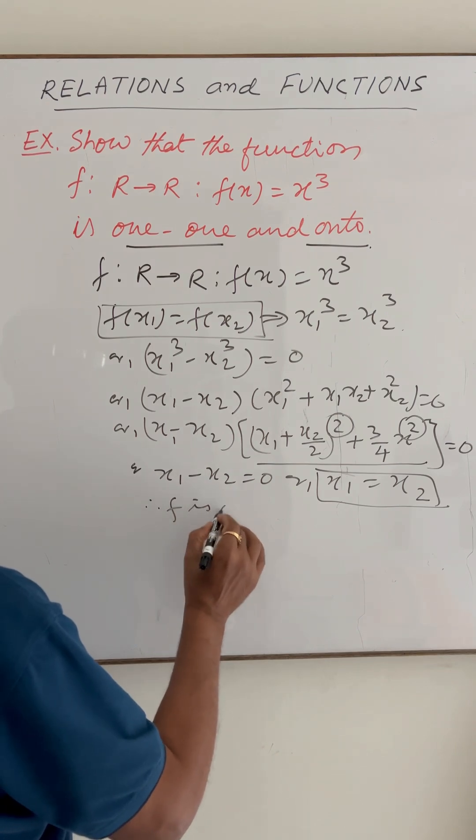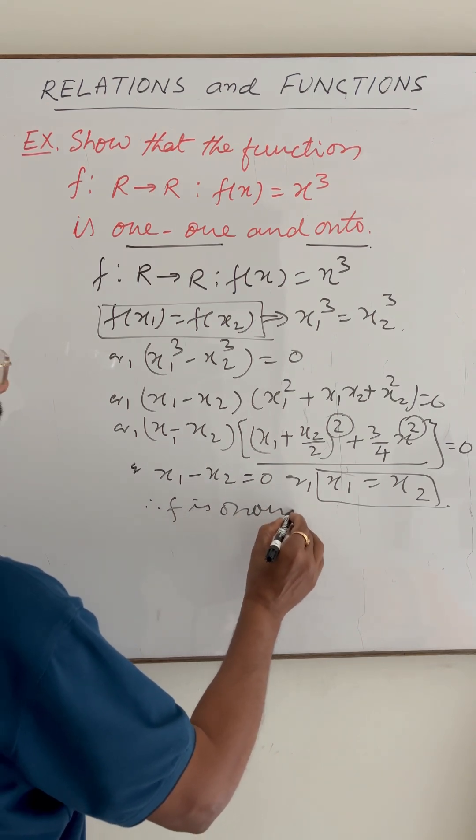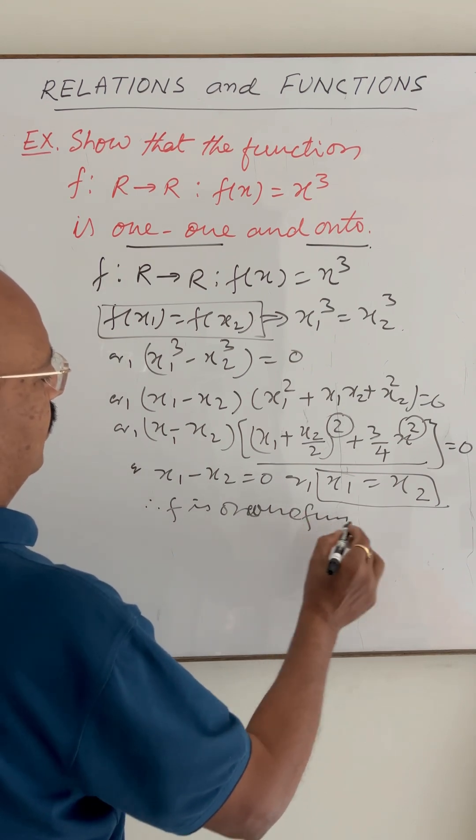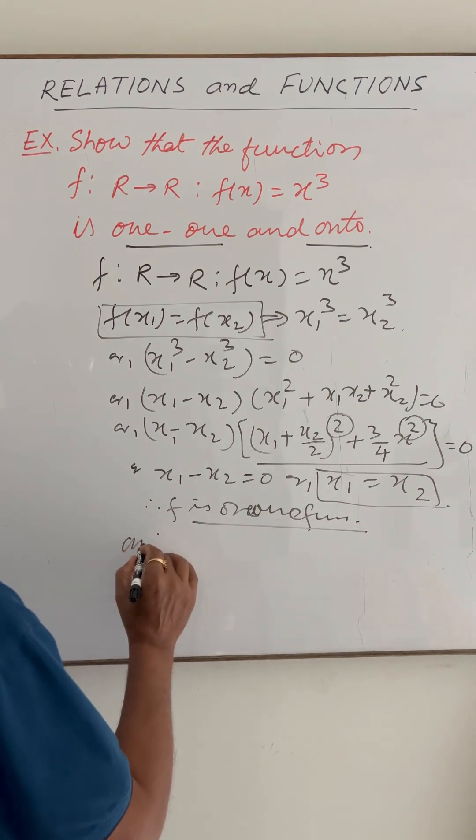Therefore, this function f is one-one function. Now we have to show that this function is onto function.